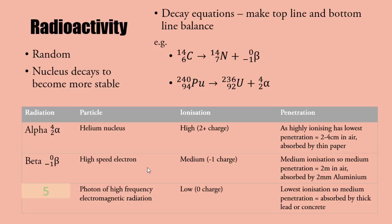The different types of radiation: alpha, beta, and gamma. Gamma is a photon of high frequency electromagnetic radiation, very high energy. It's the lowest ionization, the highest penetration, absorbed by thick lead or concrete.